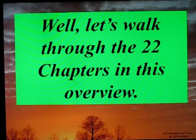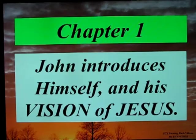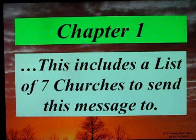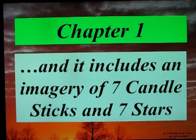Let's walk through the 22 chapters in this overview. This is Part 1. Chapter 1: John introduces himself and his vision of Jesus. This includes a list of the seven churches to send this message to, and it includes an imagery of seven candlesticks and seven stars.